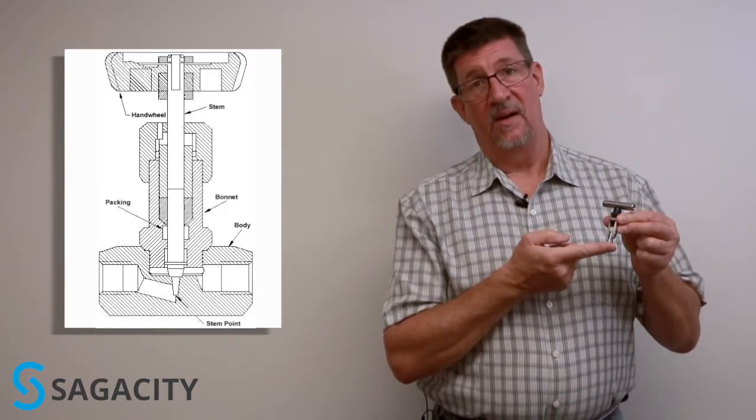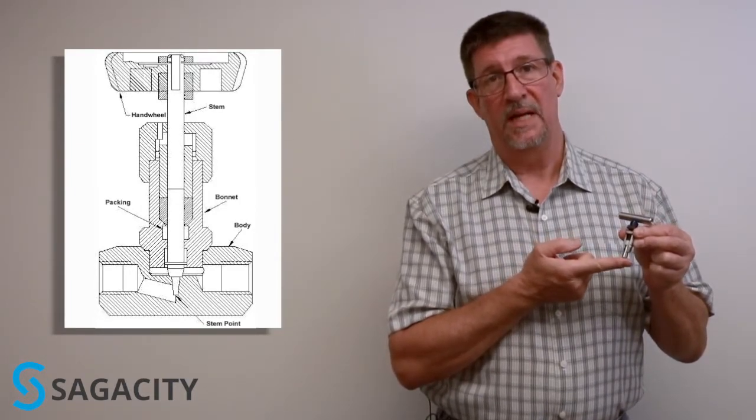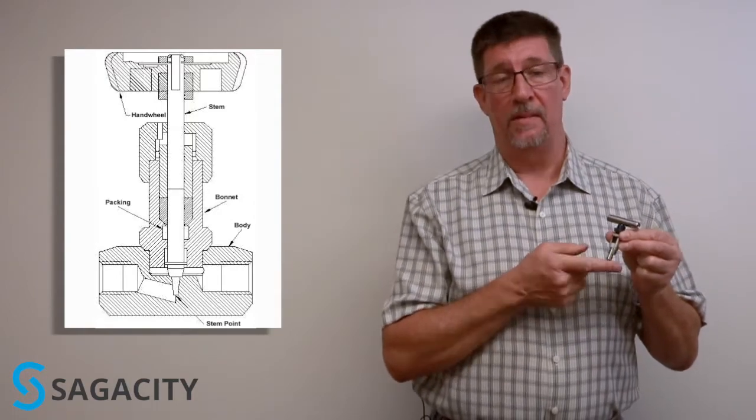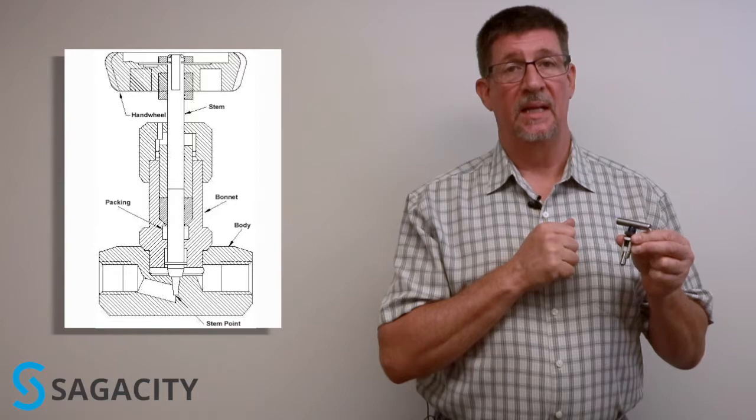and base valve needle assembly. In this particular case, it's a non-rotating stem, which has a little ball, a rotating ball, and a knuckle joint down here so that it doesn't wear the metal seat in the body when it's tightened down.